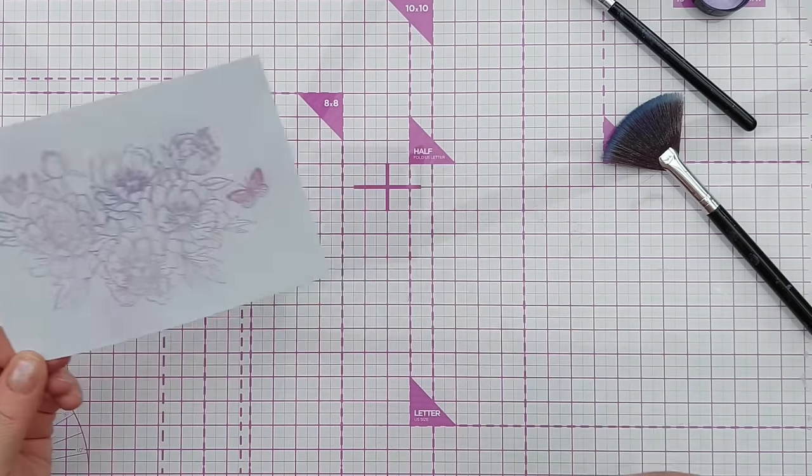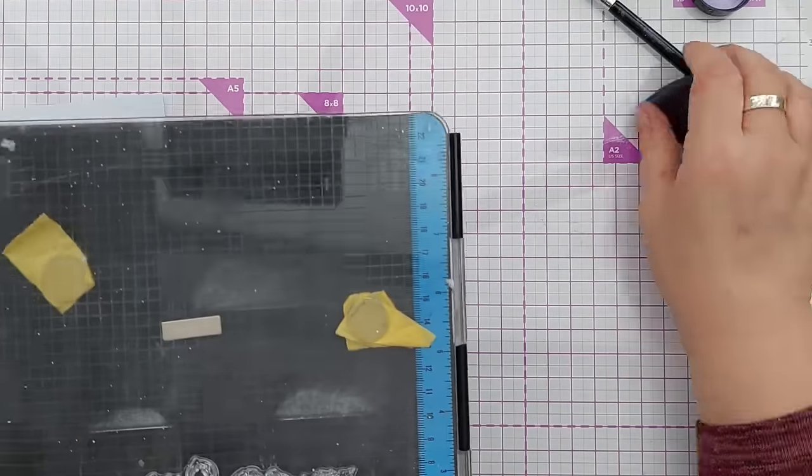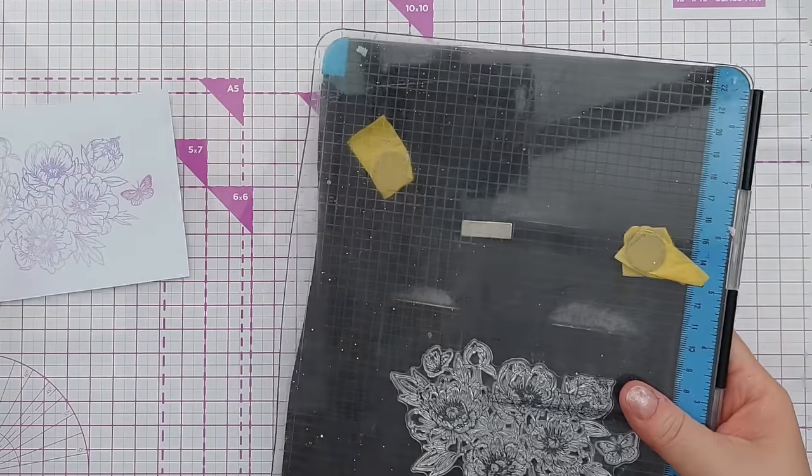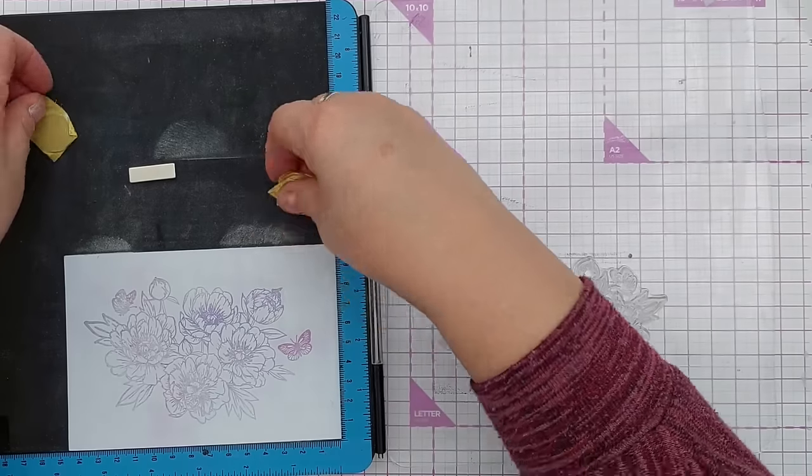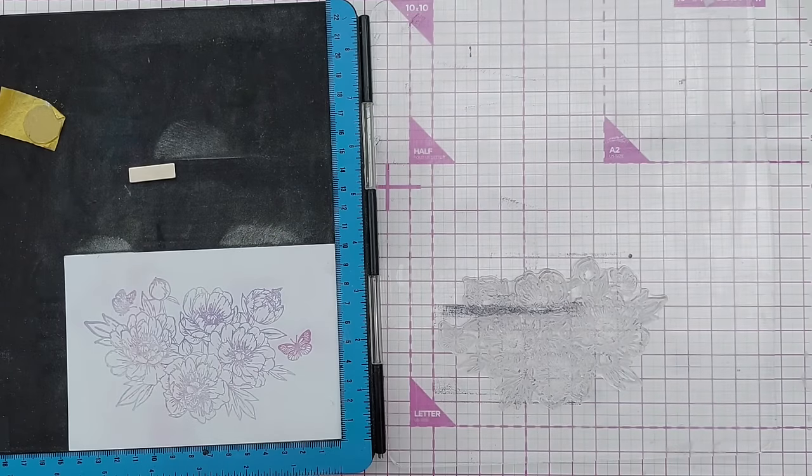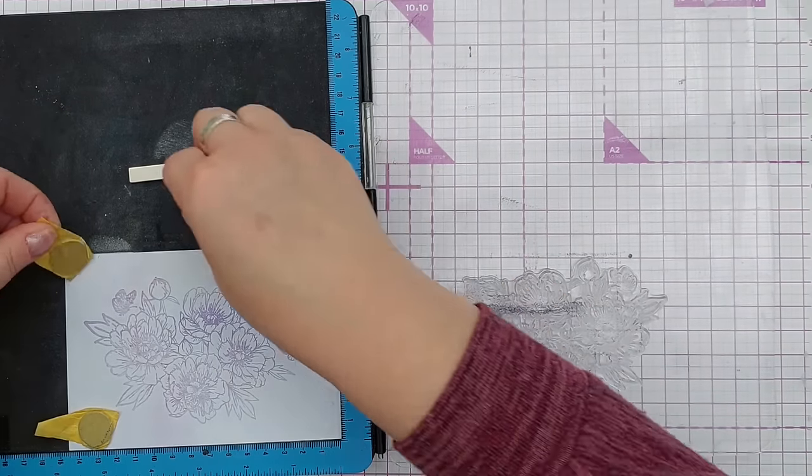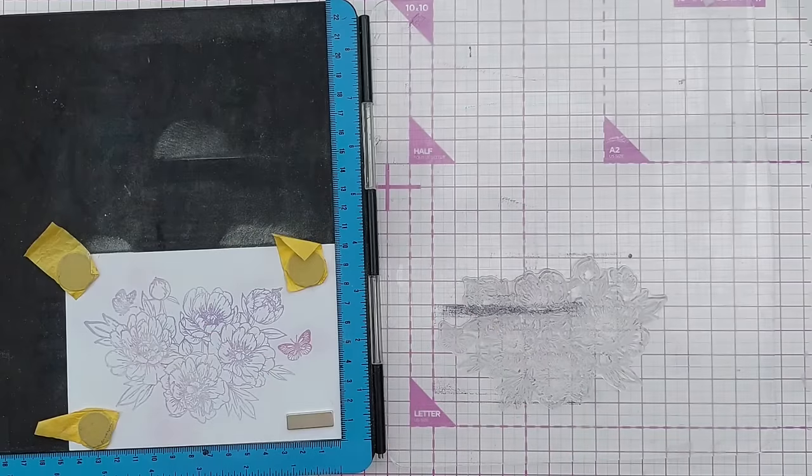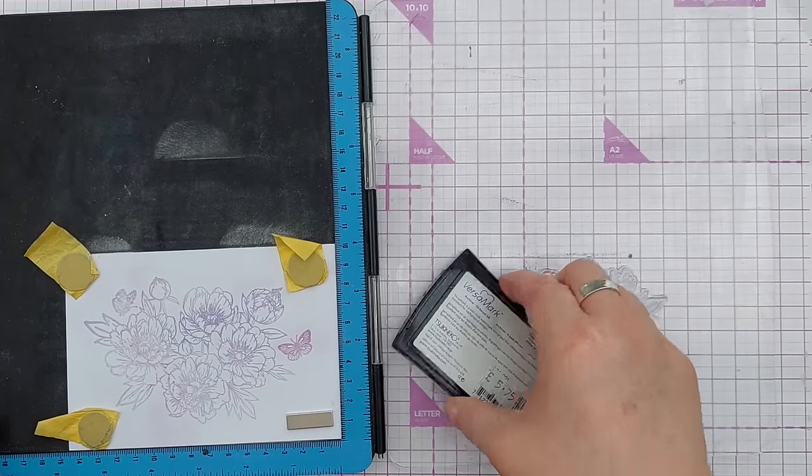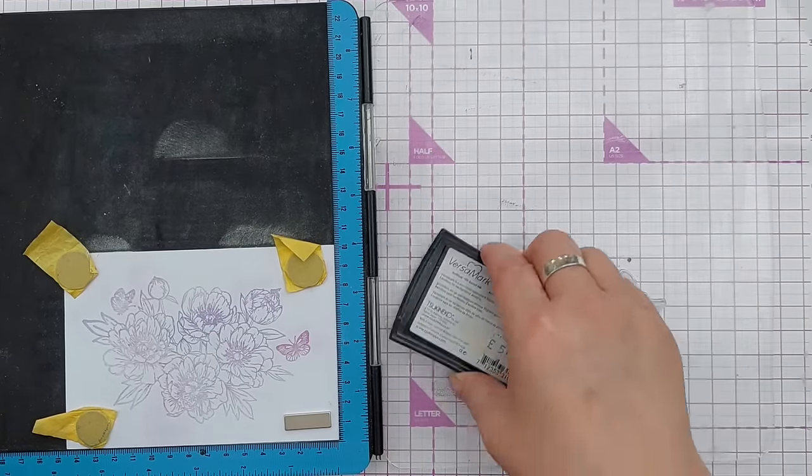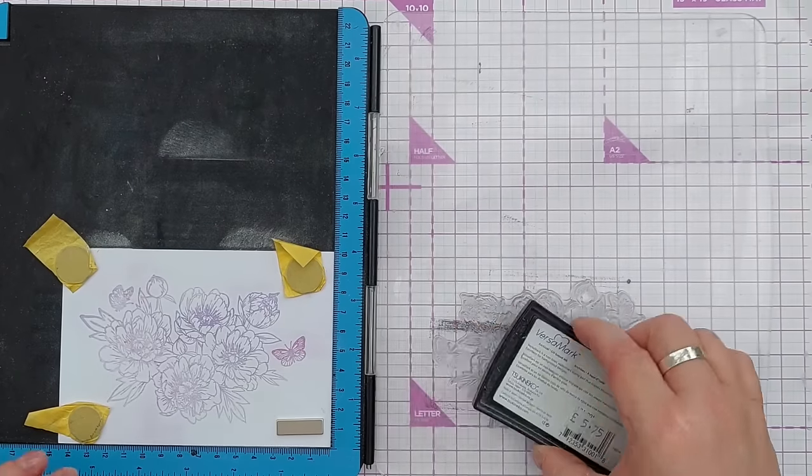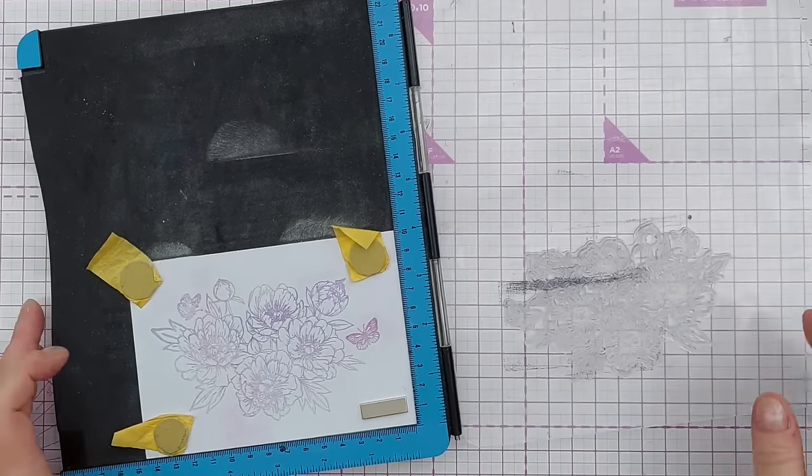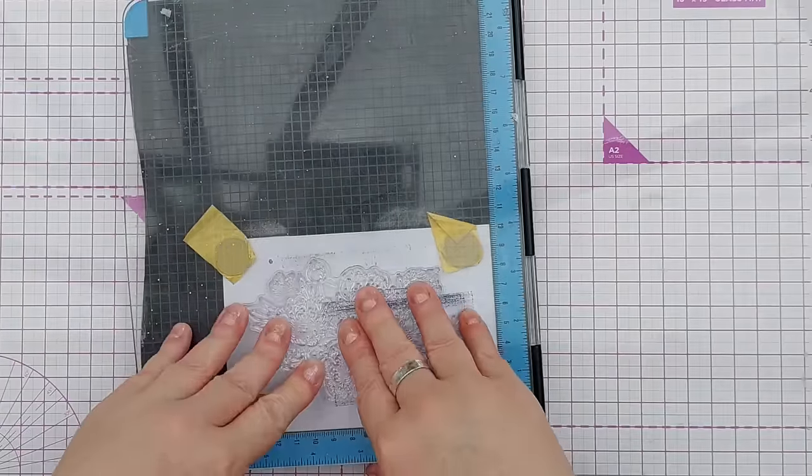Now I'm just going to see, this might be a disaster. I'm going to pop that back in there and it should be in the right place. Get my embossing ink. This might not work at all, this might be a terrible mistake, but we will see. And press that down.